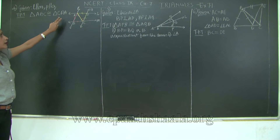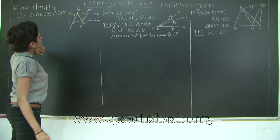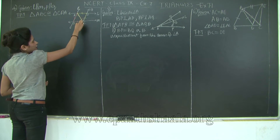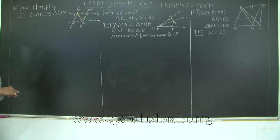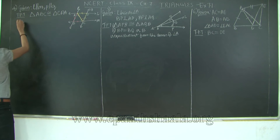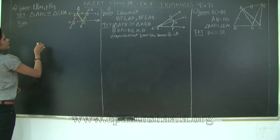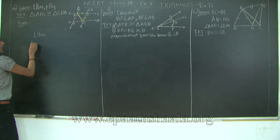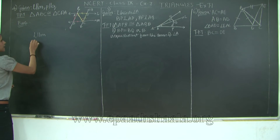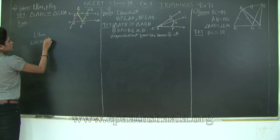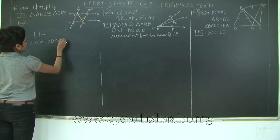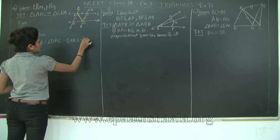So the two triangles ABC and CDA are congruent by the ASA test of congruency. Let's write this down for the proof. Since L is parallel to M, angle BCA is equal to angle DAC because they are a pair of alternate angles. I will mark this as statement 1.